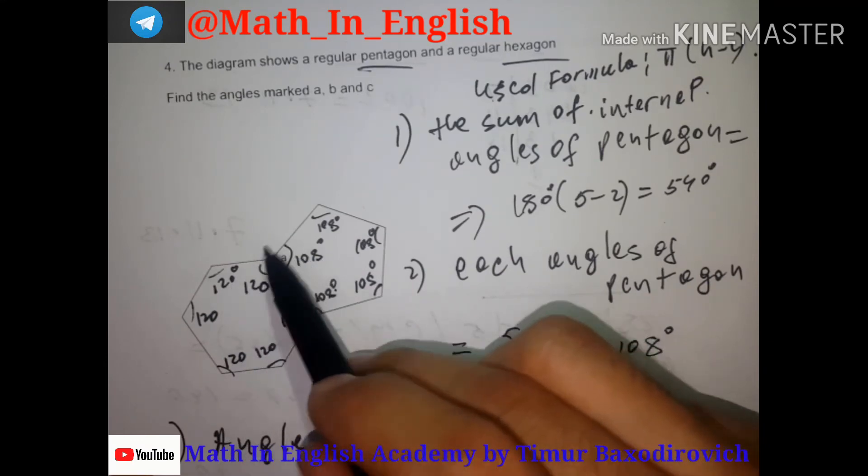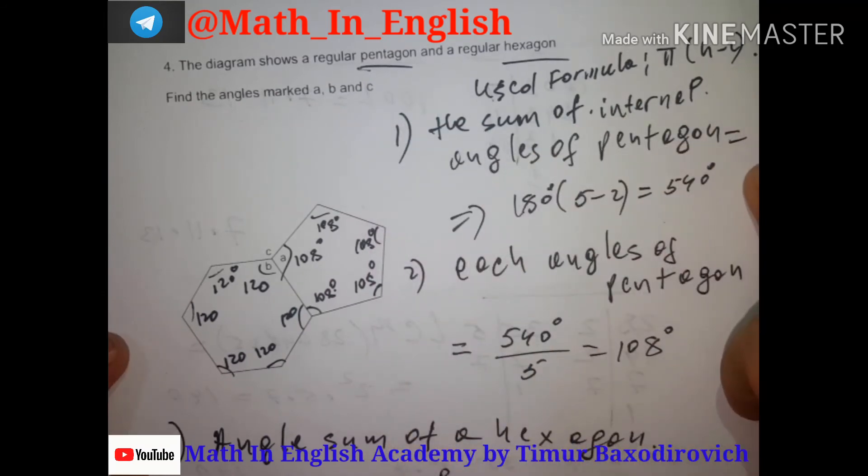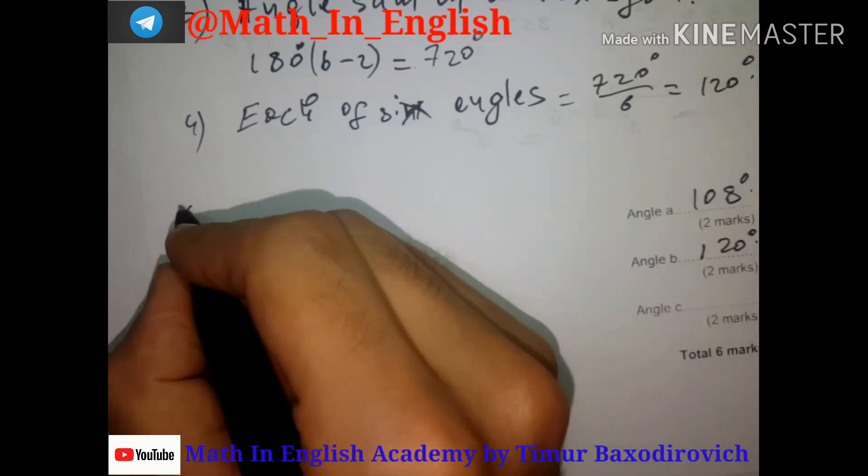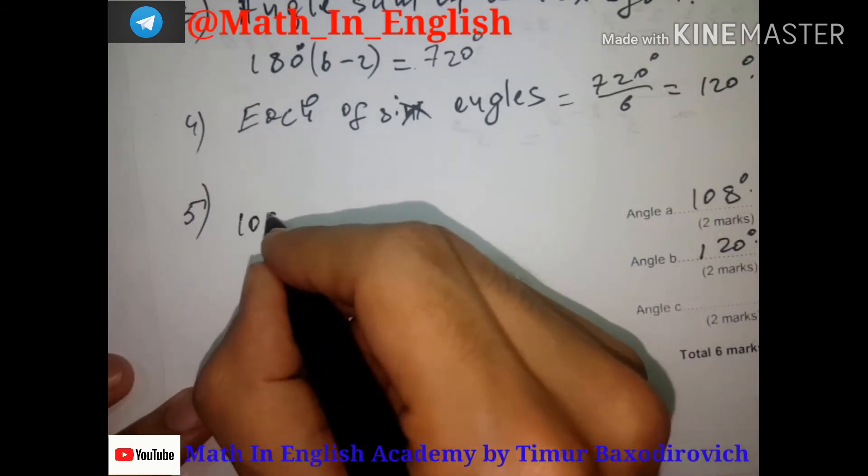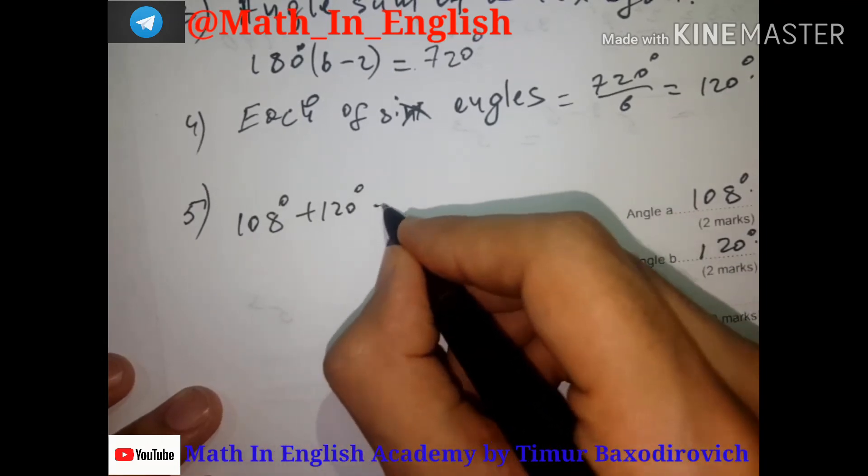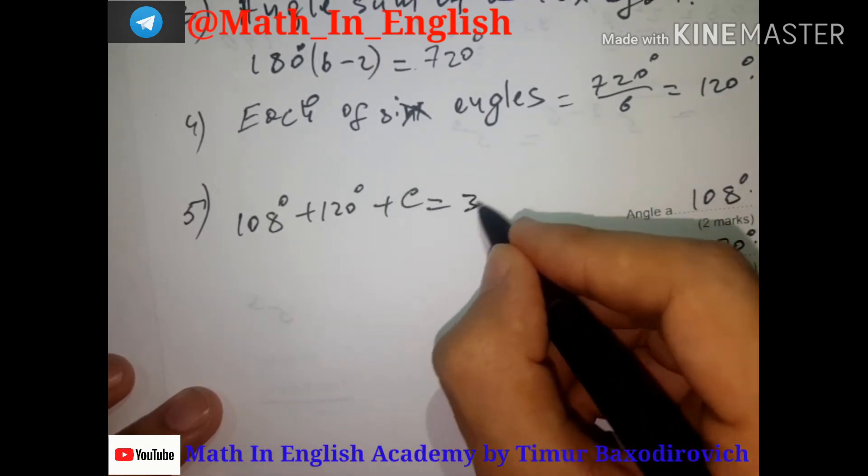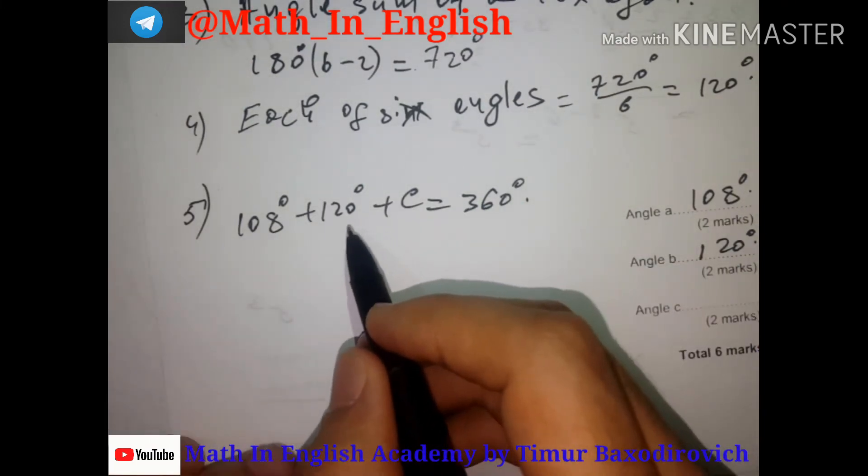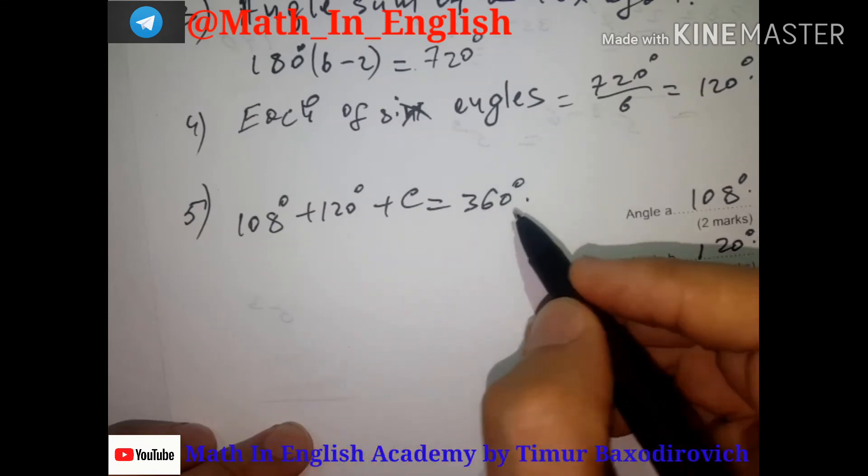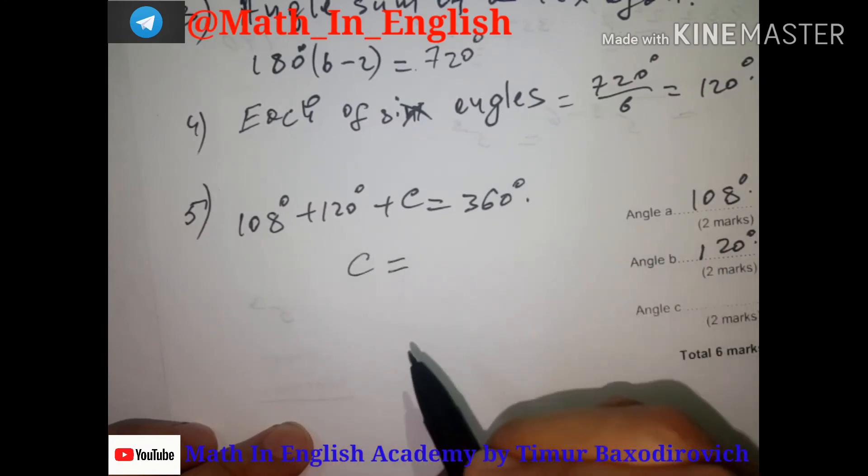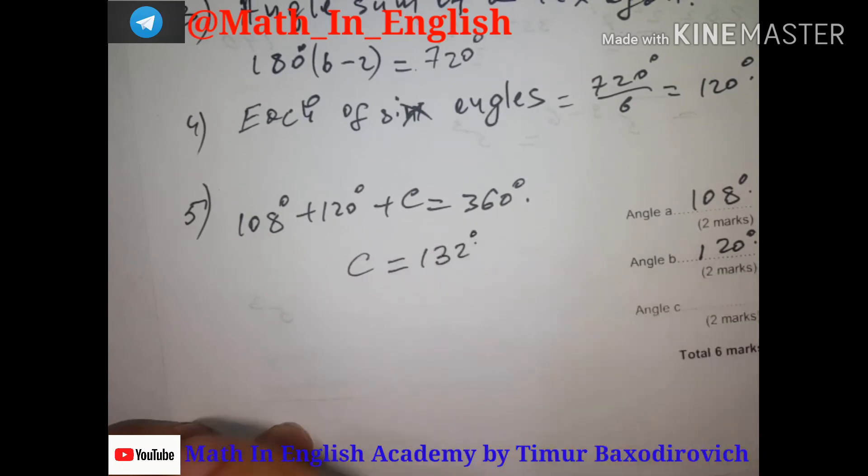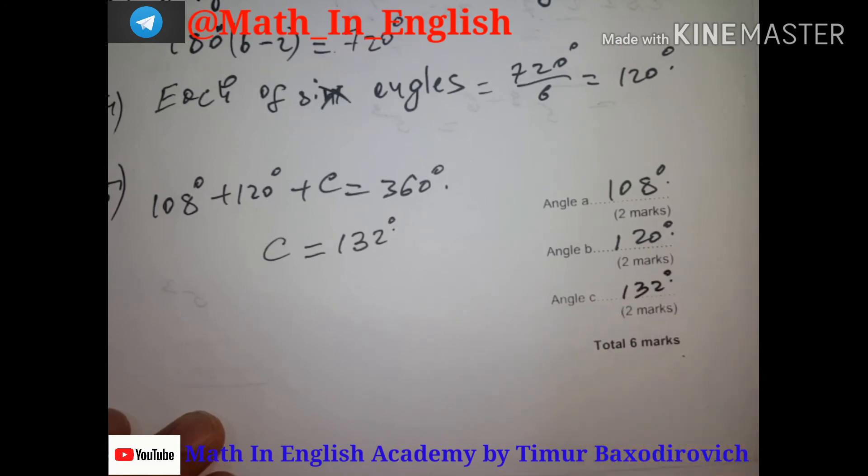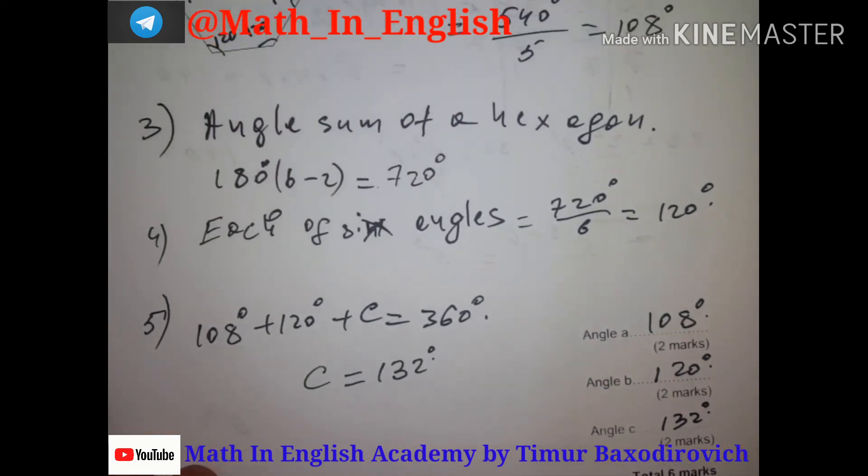In the last point, we should find angle c. We know that these angles wholly equal 360 degrees. So we may write: 108 plus 120 plus c equals 360. Then it should be 228. When you turn to the side, it's subtraction, so c will be 132 degrees. That's it - this is the full definition.